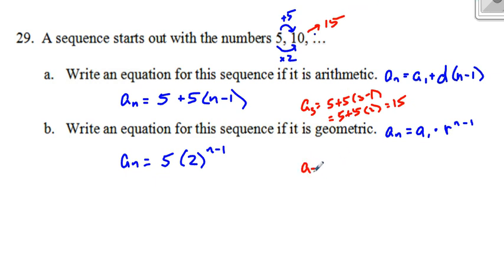Down here, if I find a sub 3, I have 5 times 2 to the 3 minus 1, which is 5 times 2 to the second, which is 5 times 4, which is 20, which would be my next term if it were geometric.